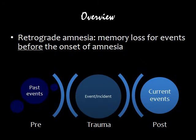Retrograde amnesia is defined as memory loss for events before the onset of amnesia. Using the diagram, the client is better able to recall current events, indicated by the circle being a lighter colour, than past events, indicated by the circle being a darker colour.